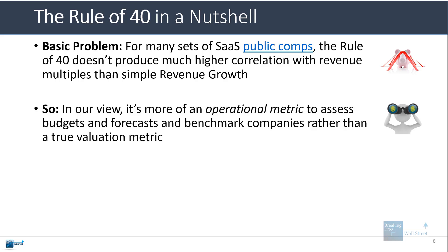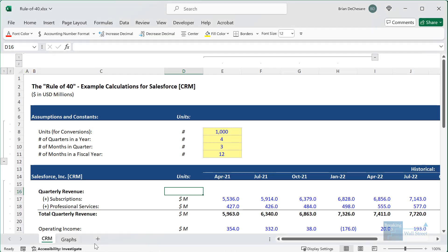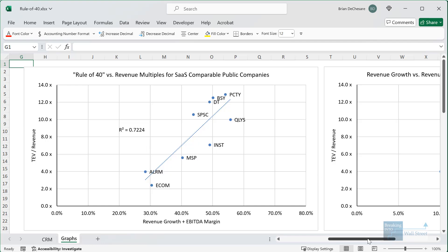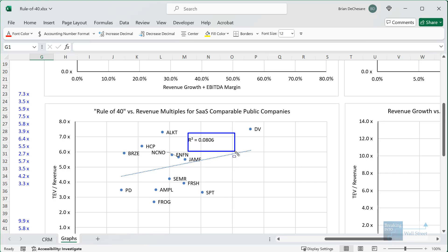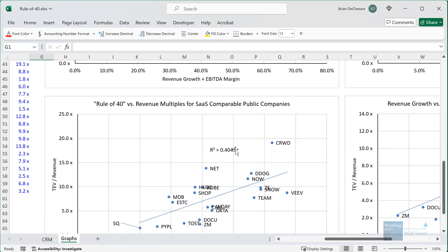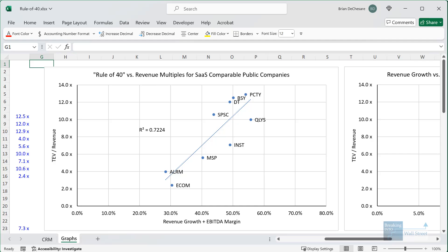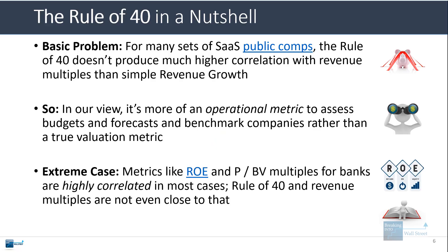The fundamental problem is that for many sets of comparable SaaS public companies, the rule of 40 doesn't necessarily produce much higher correlation with revenue multiples than simple revenue growth. Our opinion is that this is more of an operational metric you can use to assess budgets, forecasts, and projections and benchmark companies rather than a true valuation metric. Looking at some graphs, there are some sets where the correlation is fairly high — 0.72, 0.63 — but if you look at other sets, it drops to much lower levels like 0.08, or for large cloud companies, only around 0.4 R-squared. If you look at return on equity and the price-to-book value multiple for banks, these are very highly correlated — the rule of 40 and revenue multiples are not even within the same ballpark.